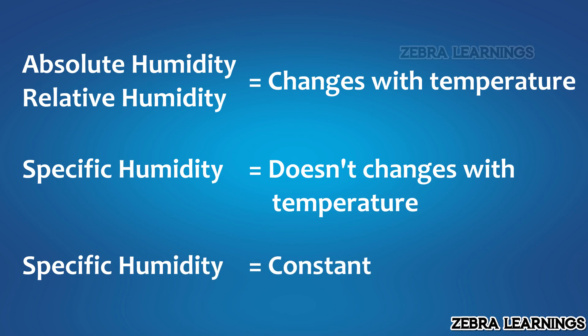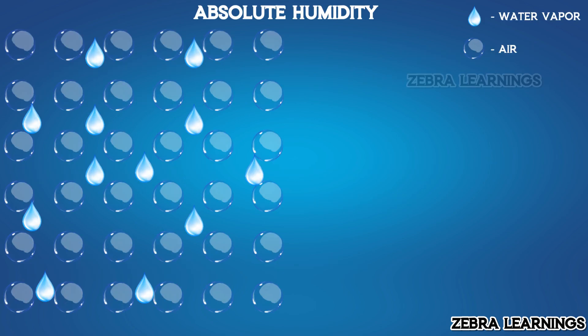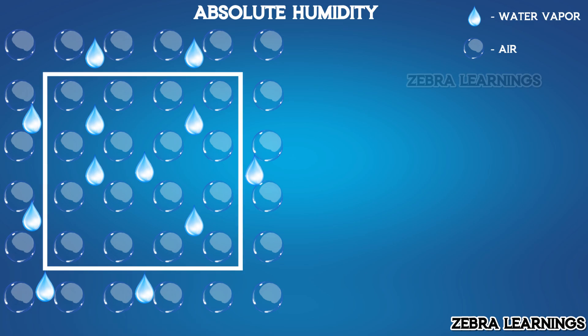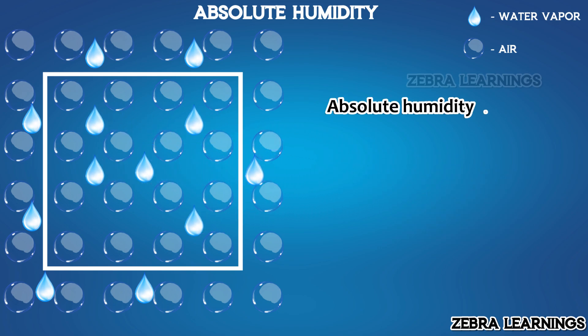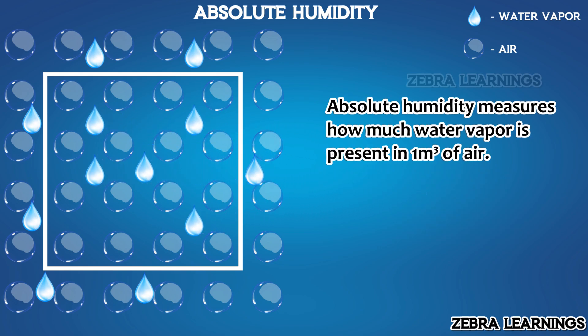Let's take an example to understand this easily. Imagine a specific area where air and water vapor are mixed. Let's measure the temperature of the air in this area as 20 degrees Celsius. Now, let's select a one cubic meter area from this space and measure the water vapor present in it — let's say there are 10 grams of water vapor. Absolute humidity measures how much water vapor is present in one cubic meter of air, so the absolute humidity value in this case is 10 grams per cubic meter.